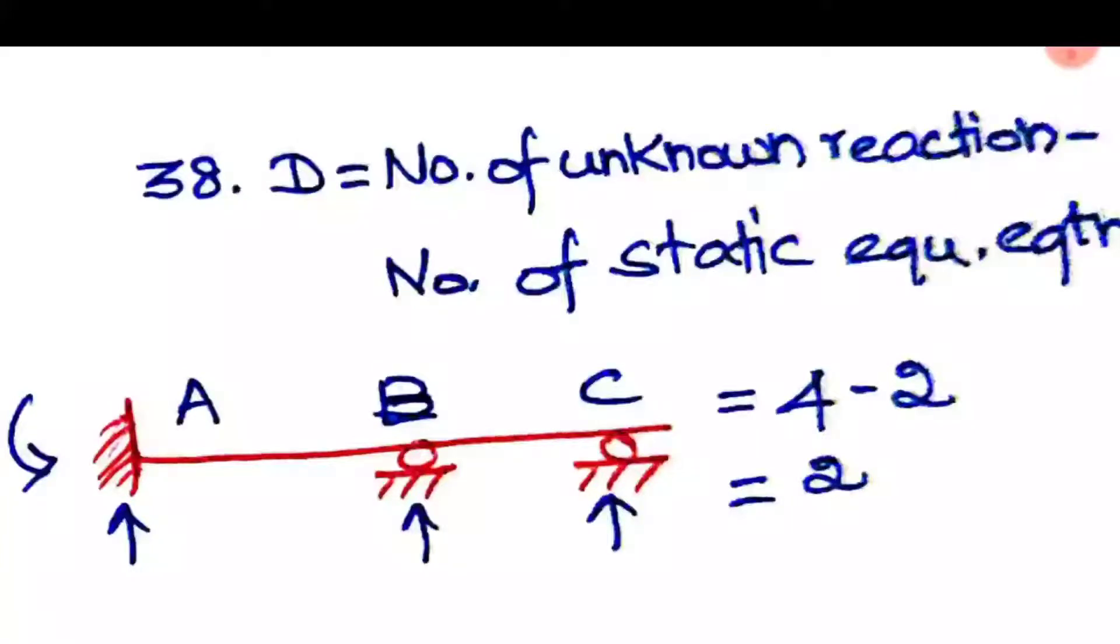The number of unknown reactions will be four: at point A we have a moment and upward reaction, and at B and C we have one reaction each. Number of static equations is 2. So 4 - 2 gives the answer of 2.